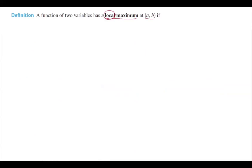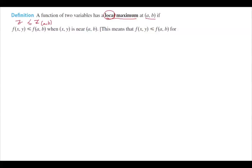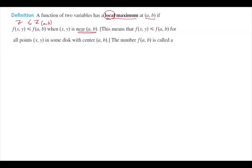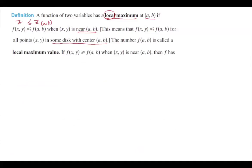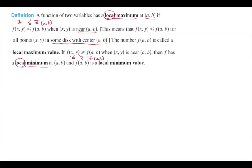Let's begin with some definitions. A function of two variables has a local maximum at point (a, b) if z values at nearby points are less than or equal to z at (a, b). This means f(x, y) ≤ f(a, b) for all points in some disk centered at (a, b). This value is called the local maximum value. Similarly, if every z value is greater than or equal to z at (a, b), we have a local minimum at (a, b), and that value is called the local minimum value.